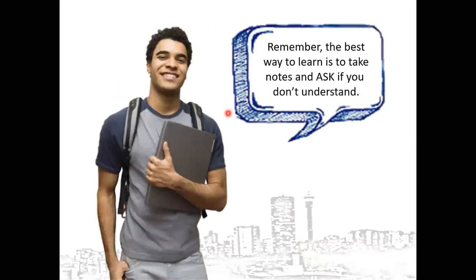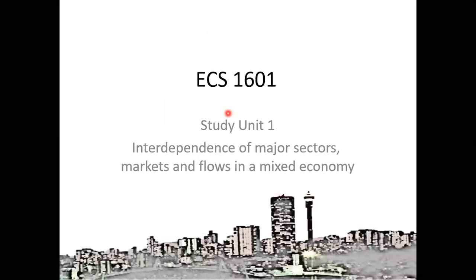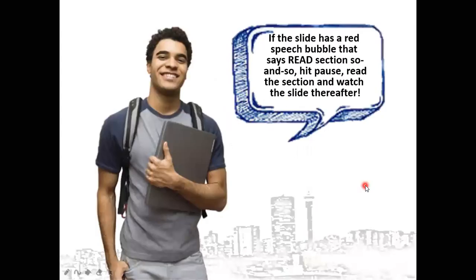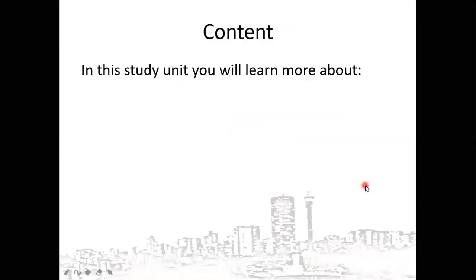The first topic is the interdependence of major sectors, markets and flows in a mixed economy. These are our objectives with regard to the first unit. We shall take into account the three methods of calculating national income, which consist of the production approach, the income approach, and the expenditure approach. The expenditure approach is also known as the spending approach.